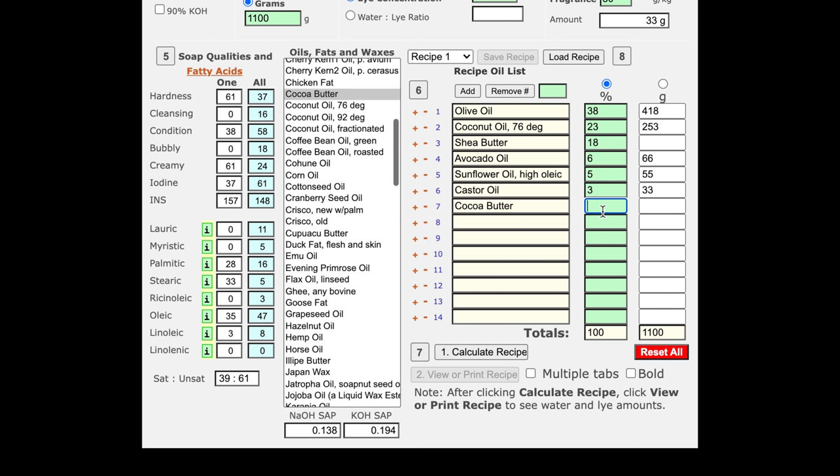Once you have all of your ingredients listed, you just select to calculate the recipe, then to view or print it. Soap Calc will give you a really nice listing of your recipe, including the amount of sodium hydroxide required to saponify your oils. Thank you so much for watching, and I hope you found something useful here to help you in your soap making.